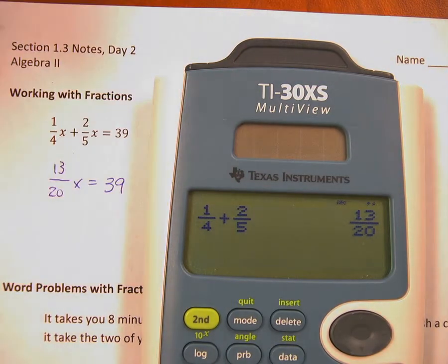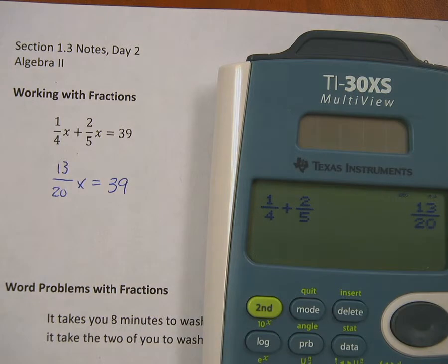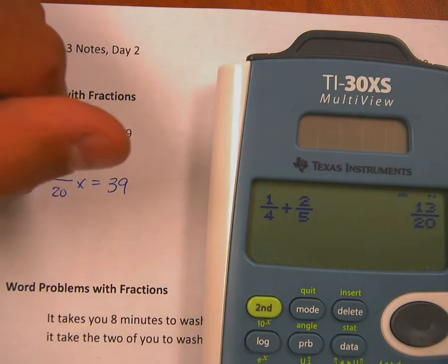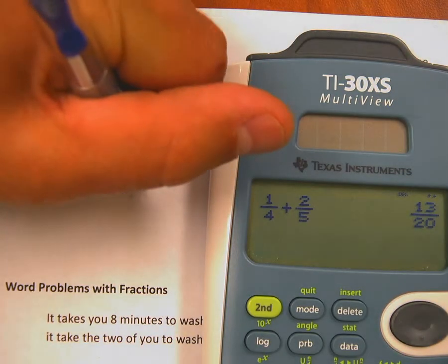Now to get rid of the 13/20, I just need to multiply both sides by the same amount, and the amount that I'm going to multiply it by is just the reciprocal, that is 20/13. Flip that fraction, but I got to do it to both sides, 20/13 over here as well.